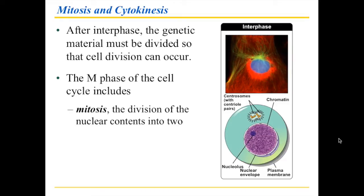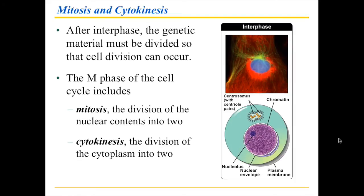Mitosis itself is actually dividing the nuclear contents into two. That essentially means we need to take each of the chromosomes and separate the sister chromatids from each other. The second part is the actual physical division of the cell — the cytoplasm — into two units, and that is called cytokinesis.